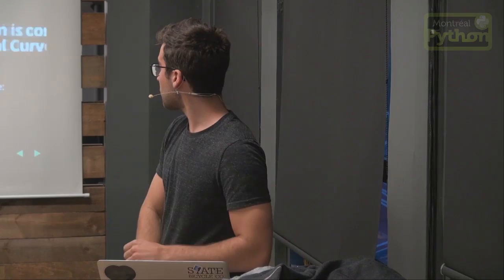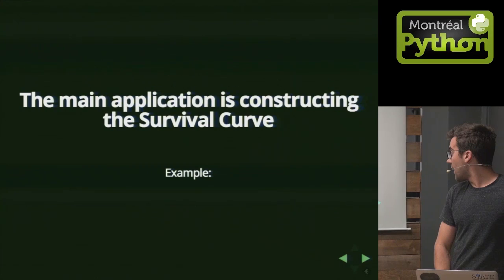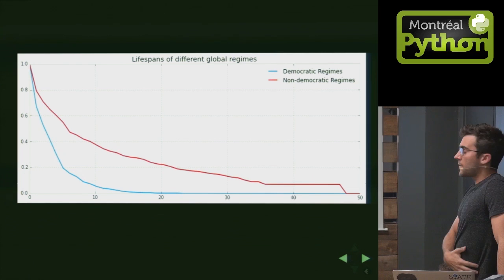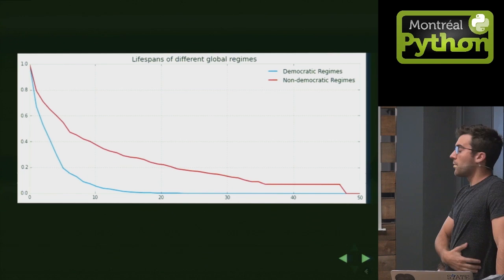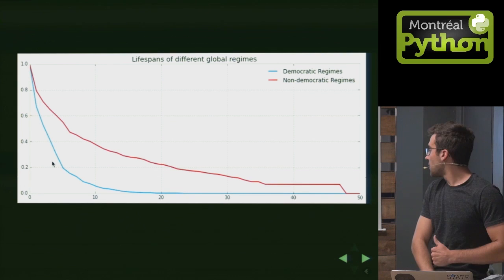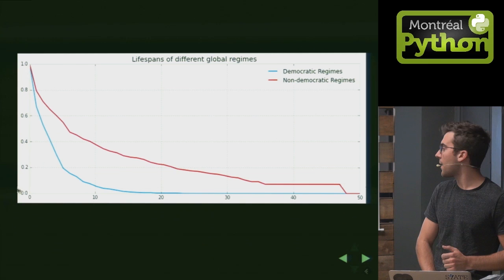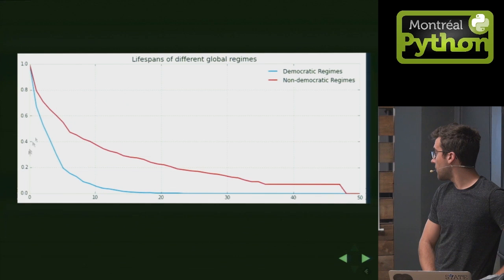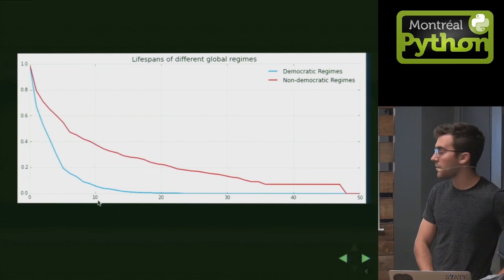The main application of survival analysis is constructing the survival curve. Here's an example: the title is 'Lifespans of Different Global Regimes.' The blue line is the survival curve of democratic regimes, and the red line is the survival curve of non-democratic regimes. The y-axis is the probability of surviving past x years. At 10 years, the probability of a democratic regime surviving is about 10%, while for a non-democratic regime it's about 37%.